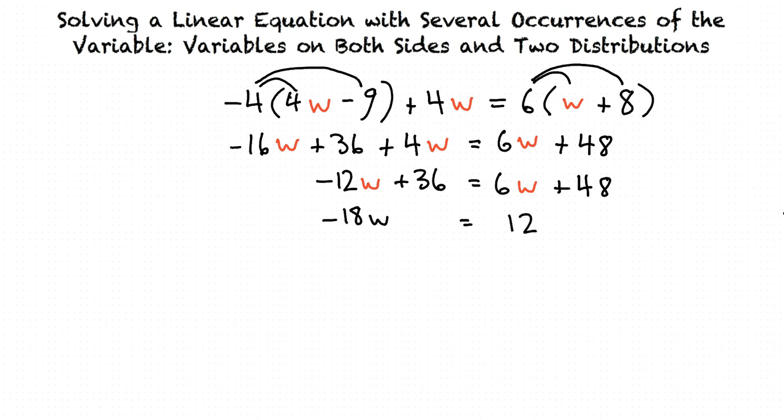And now to solve for w, we divide by negative 18 on both sides. And the result is w equals negative 12 over 18.